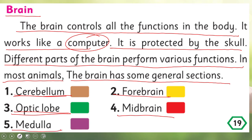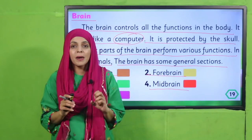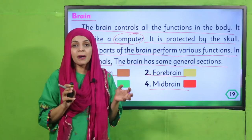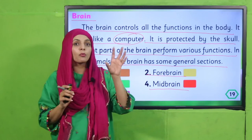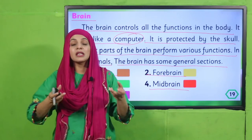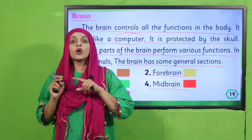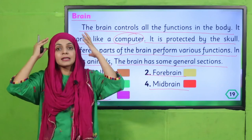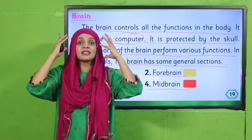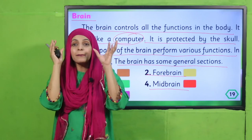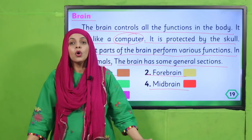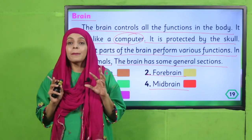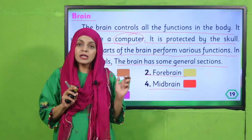The parts of the brain are: cerebellum, forebrain, optic lobe, midbrain, and medulla. Just as the CPU is the most important part of a computer and controls all other parts — your monitor, mouse, keyboard are all connected to and controlled by the CPU — similarly, your brain is the central processing unit of your body, controlling and connecting with your entire body.